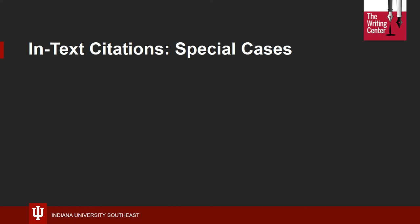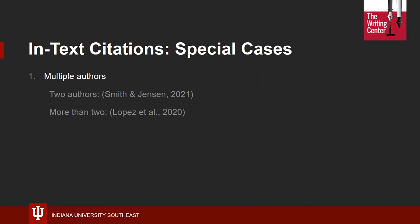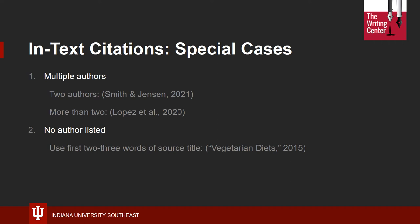There are many times when a single author is not the only one listed, and even cases where you may not have an author listed at all. If you have two authors, simply provide both names in the order they are listed on the source, separating them with an ampersand rather than the word "and" in APA, followed by the year. If you have more than two authors, which is very common with academic articles, provide the last name of the first author listed and then write "et al.," which is an abbreviation meaning "and others." This applies whether you have three authors or fifteen. If you do not have an author, which may be the case for many web-based sources, use part of the title of the source in quotation marks inside the parentheses, shortening it to the first couple of words if it is longer than two to three words.